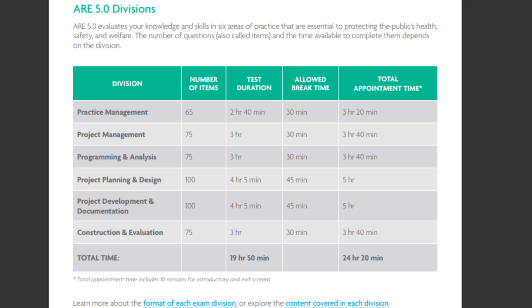After completing the 3,740 hours, you will have to register for an examination. This examination takes you through six subjects, with exam papers ranging from two hours to three and a half hours. You must complete these examinations to get yourself registered as an architect.